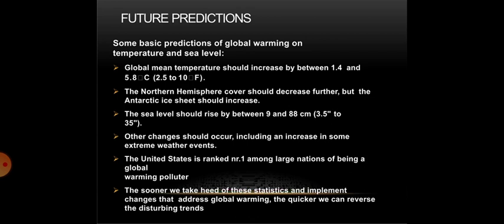Here are some future predictions. Global mean temperature should increase by between 1.4 and 5.8 degrees Celsius. The northern hemisphere snow cover should decrease further, but the Antarctic ice sheet should increase. The sea level should rise by between 9 and 88 cm. Other changes should occur, including an increase in some extreme weather events. The United States is ranked number one among large nations as a global warming polluter. The sooner we take heed of these statistics and implement changes, the quicker we can reverse the disturbing trends.